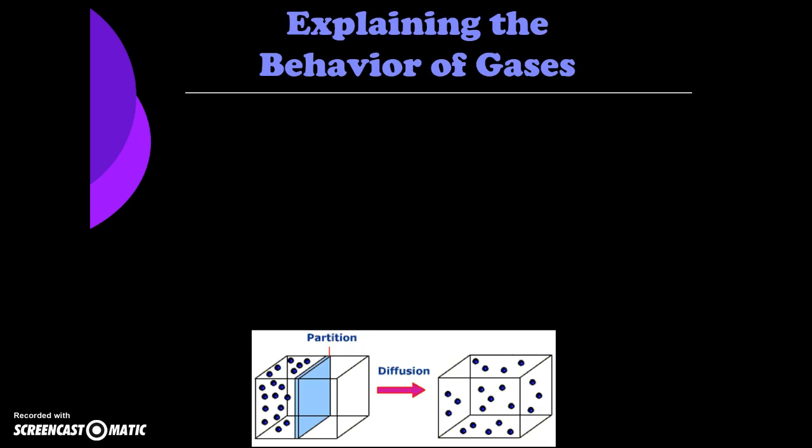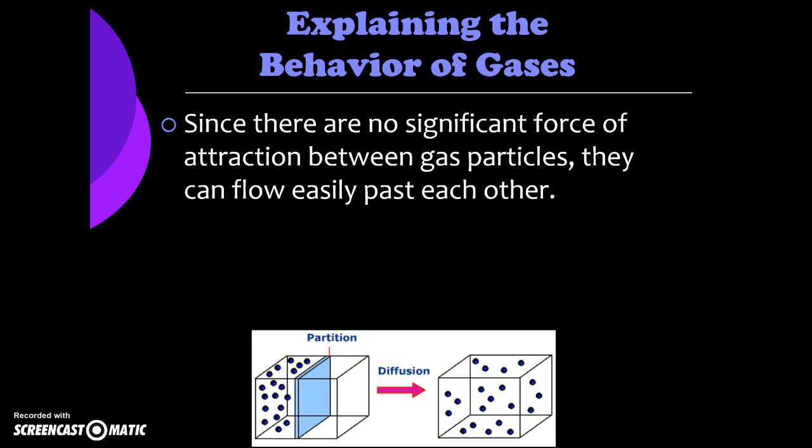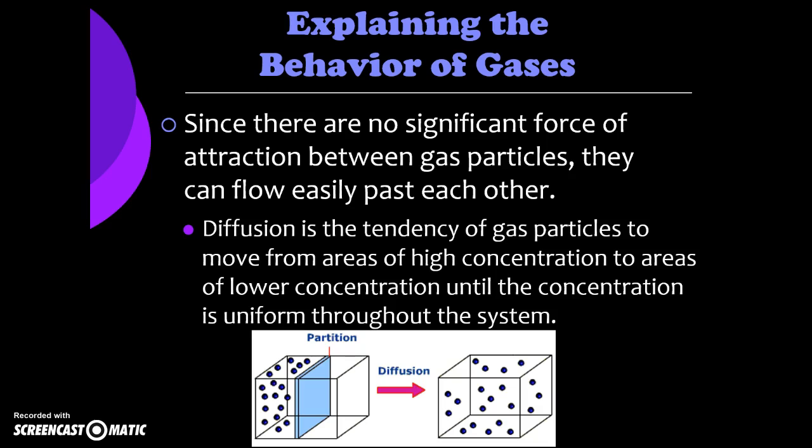As we saw in another point in the kinetic particle theory, there isn't any significant force of attraction between gas particles. Because of this, they can flow very easily past one another. This behavior can explain two types of qualities of gases, which is diffusion and effusion. Diffusion we saw with the popcorn particles. If we have the popcorn smell particles partitioned inside the bag, you can see there's a high concentration of particles. As soon as we open the bag or remove this partition, the popcorn particles, because they're moving, are going to collide and spread out to fill the available container. So diffusion is the tendency of gas particles to move from a high concentration area to a low concentration until they're spread out evenly through the system. You may also have learned about diffusion across the cell membrane in biology.